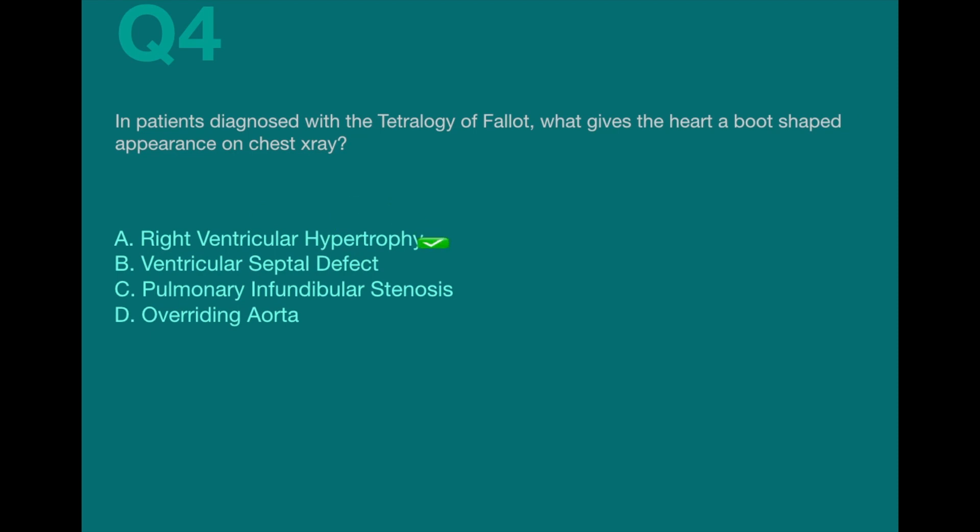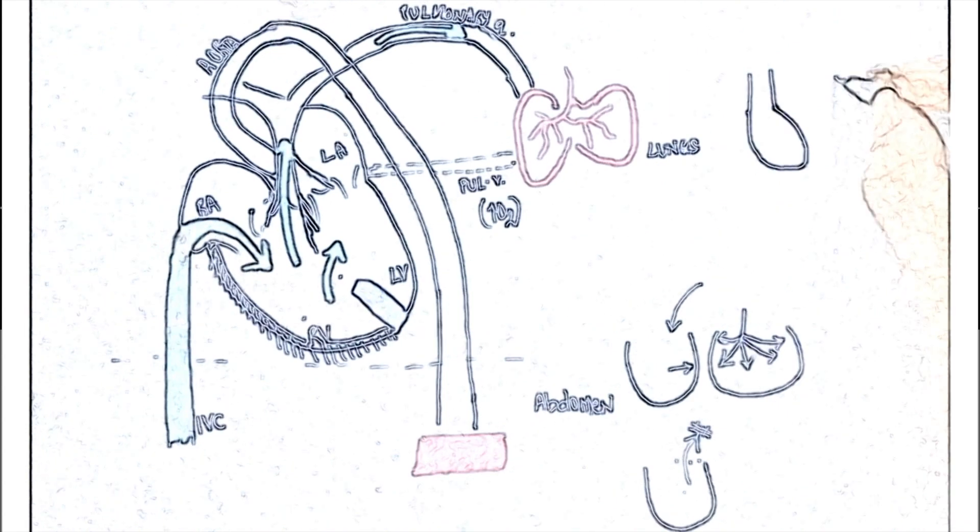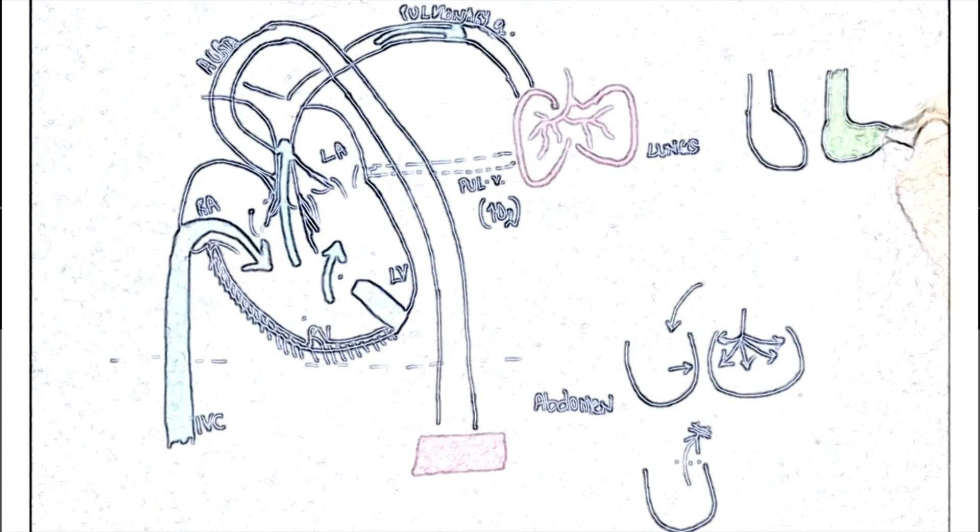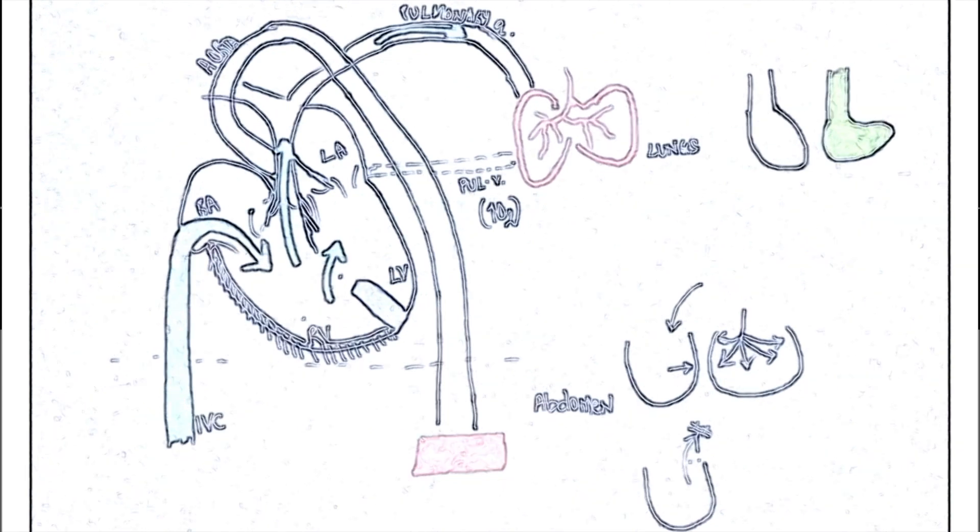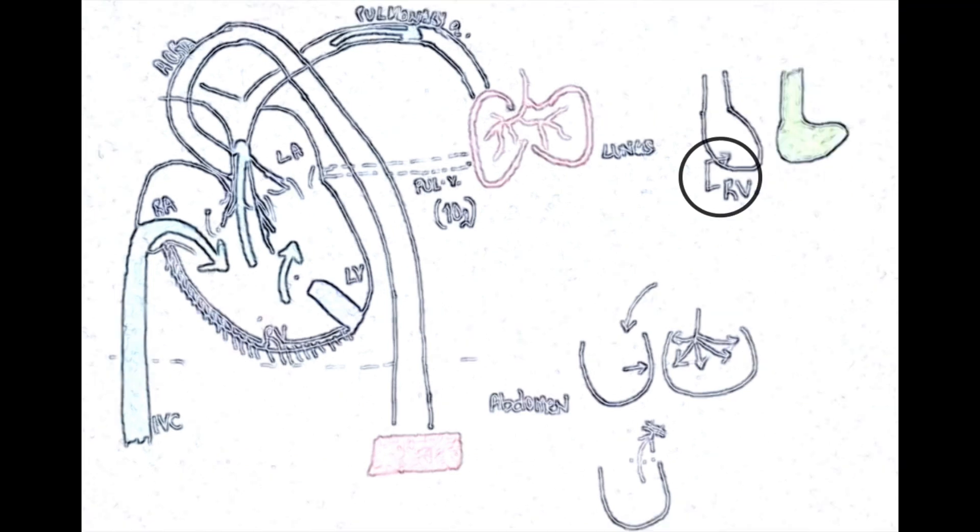The answer to this question is right ventricular hypertrophy. The heart normally looks like this and this is a boot. So, for a heart to look like this, this region should undergo hypertrophy. The right ventricle is the most anterior part of the heart. Hence, if this part undergoes hypertrophy, it would look something like this.